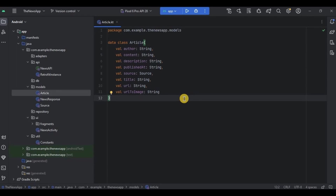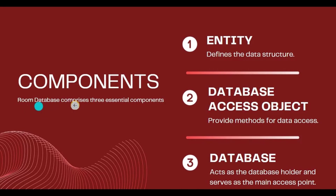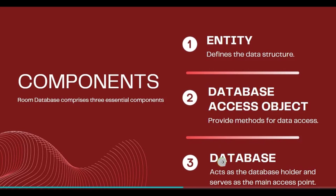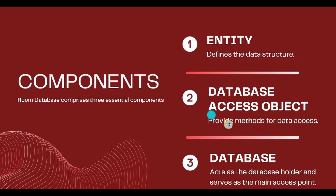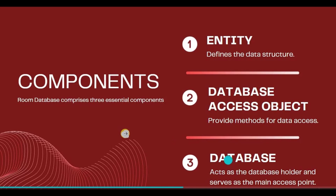Before that, let me refresh your memory. Room Database consists of three components: Entity, DAO (that is, Data Access Object), and Database. Entity defines the data structure. DAO provides methods for data access, and Database serves as the main access point.